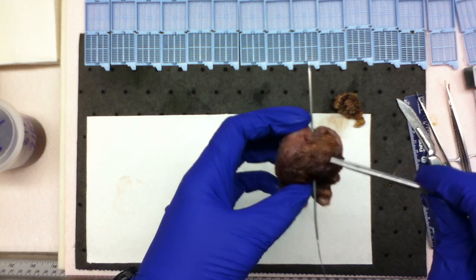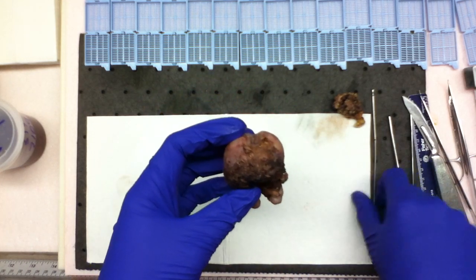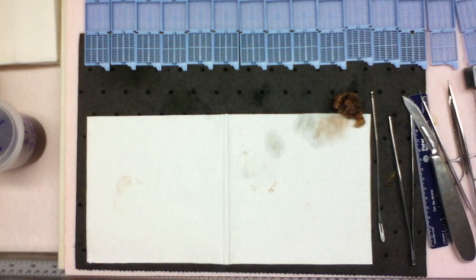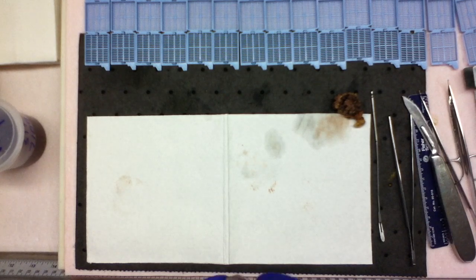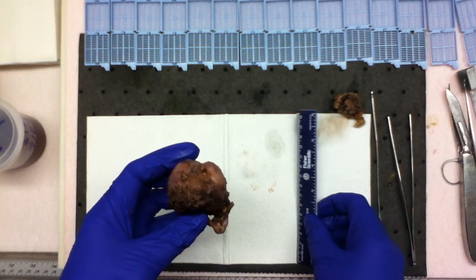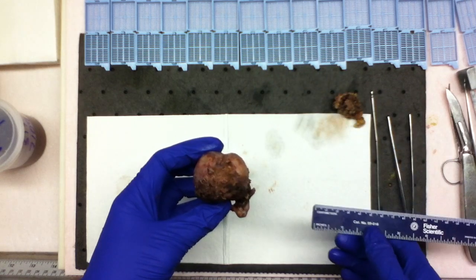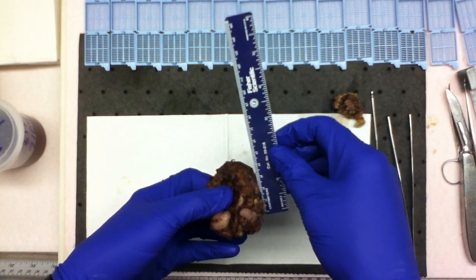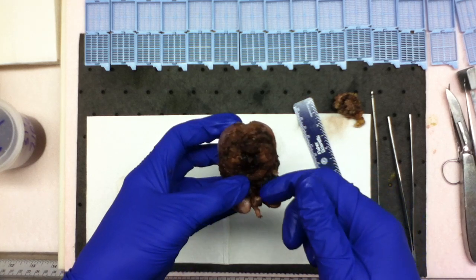With every parenchymal organ, the first thing we'll do to a prostate is weigh it. It consists of a 94.6 gram, 4.1 centimeter in length by 4.8 centimeter in width by 4.7 centimeter anterior to posterior prostatectomy specimen with attached bilateral vas and seminal vesicles.